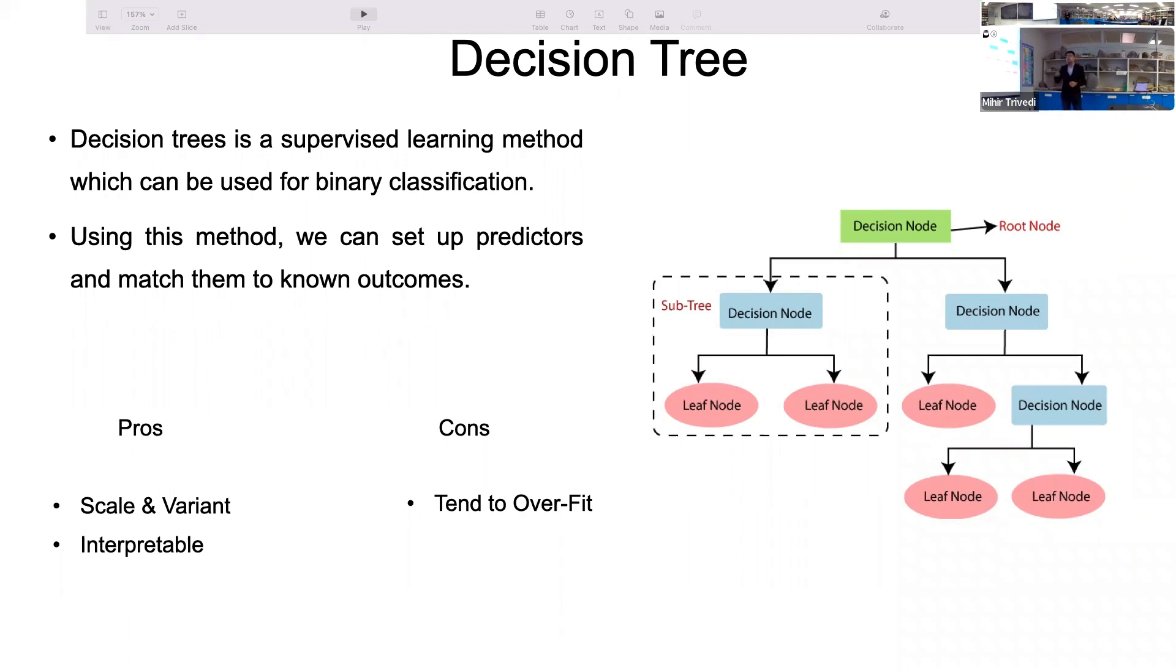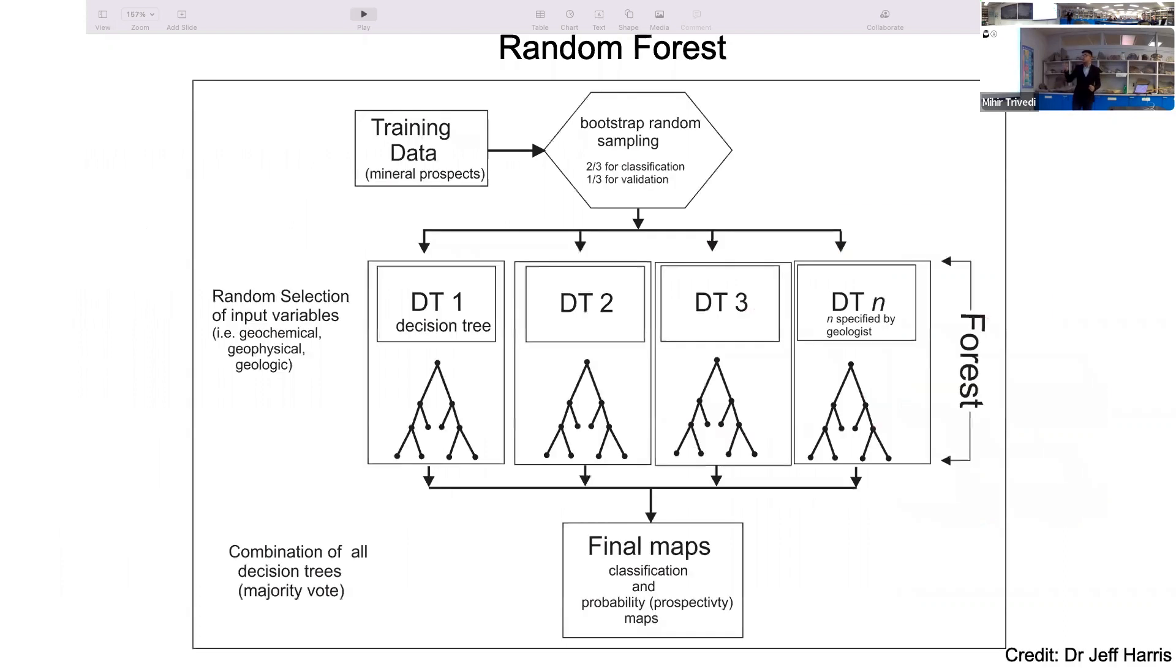One disadvantage we find in decision tree is that it tends to overfit. If you have considered one attribute, for example magnetic susceptibility or density, and based upon that built your decision tree, you may get good accuracy and good results, but you cannot say it is generalized. The result might change if you change the region, attribute, or mineral. You cannot get a generalized result if you use one decision tree.